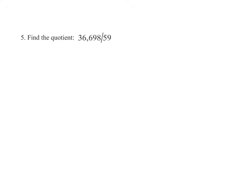Find the quotient of 36,698 divided by 59. To divide, we rewrite in conventional form. That is, 36,698 divided by 59.